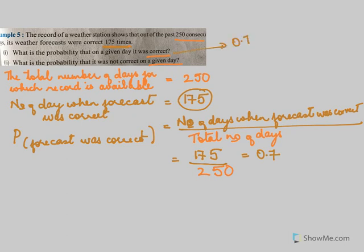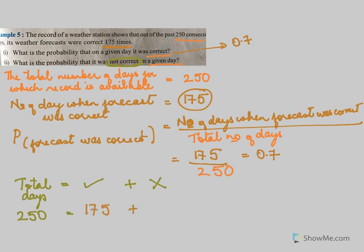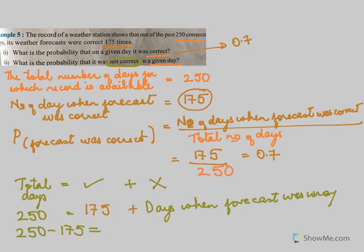Now we must find the probability when the forecast was not correct. The total days equals the days when the forecast was correct plus the days when the forecast was wrong. Total days was 250, the forecast was correct for 175 days, so the days when the forecast was wrong would be 250 minus 175, which is 75 days.